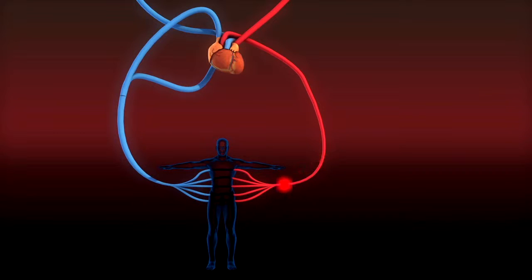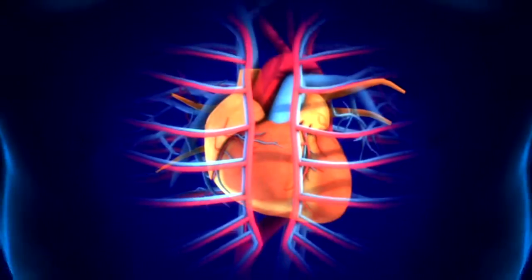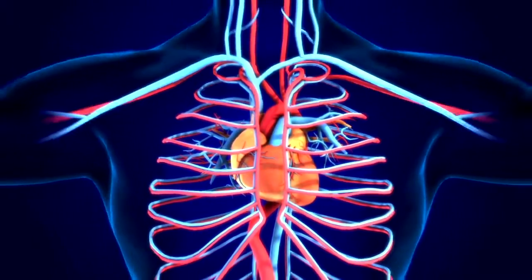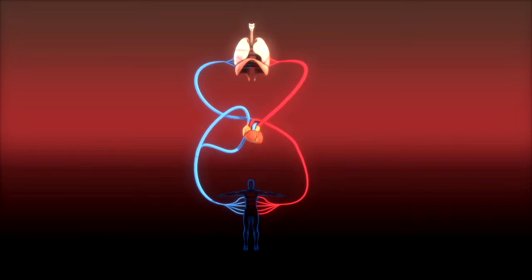The systemic circulation is much longer than pulmonary circulation because it transports blood to every part of the body. In short, blood circulation is a closed circle. Blood goes away from the heart in the aorta, traveling to various parts of the body in capillaries, and comes back to the heart in veins.